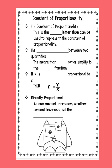Today we're going to talk about the constant of proportionality. So K is the letter that represents constant of proportionality. This is the only letter that can be used to represent the constant of proportionality. This is the constant ratio between two quantities. This means that all ratios are going to simplify to the same fraction.